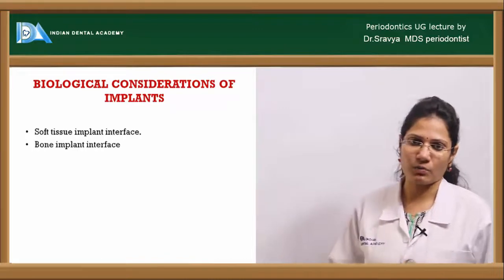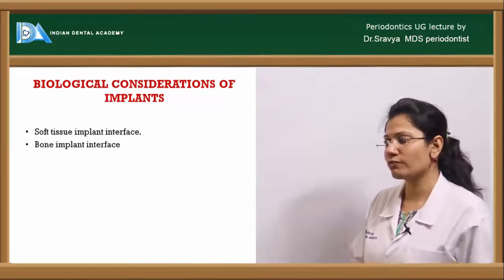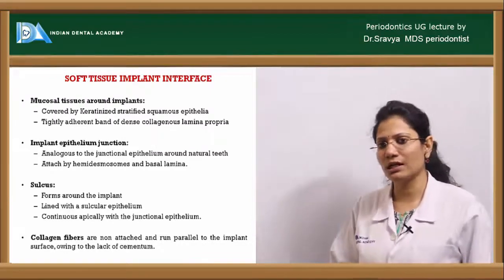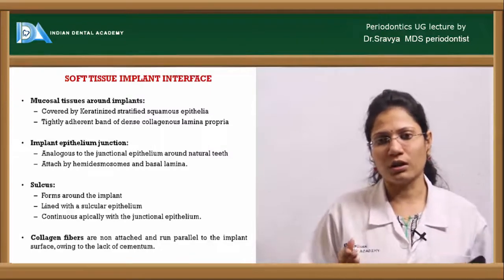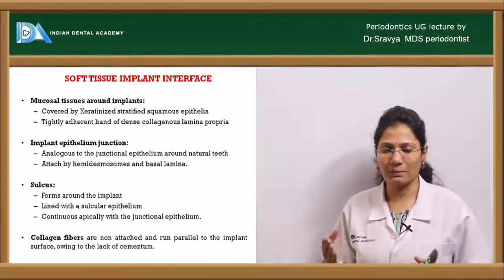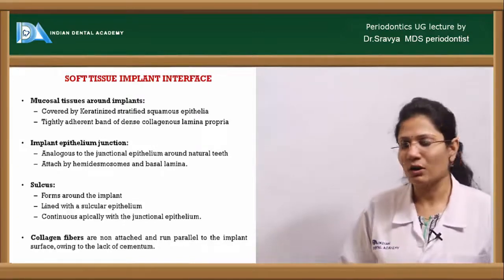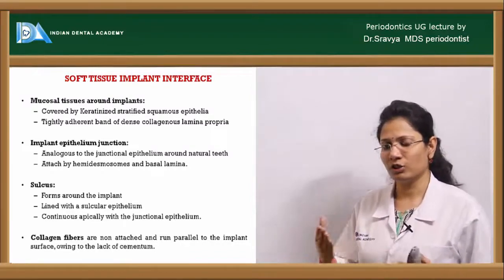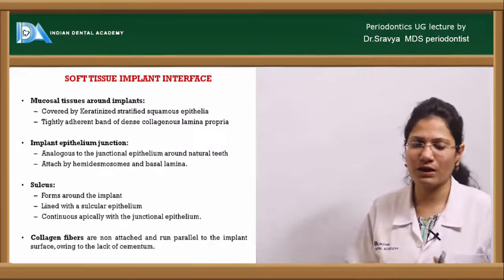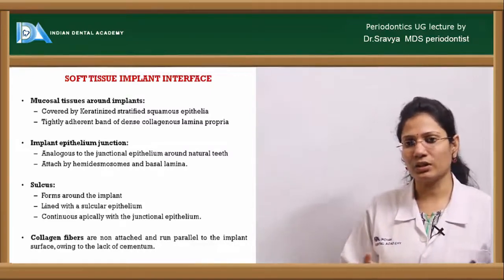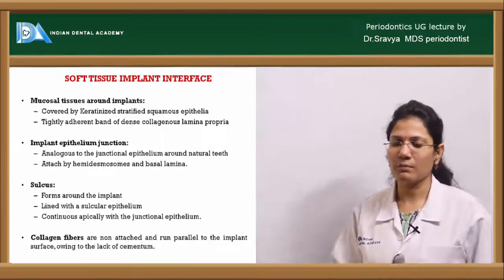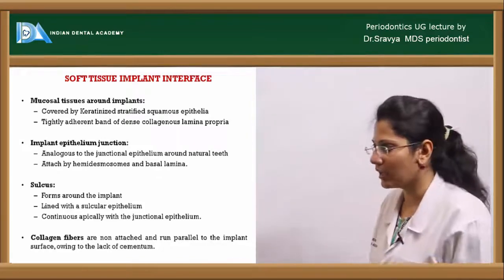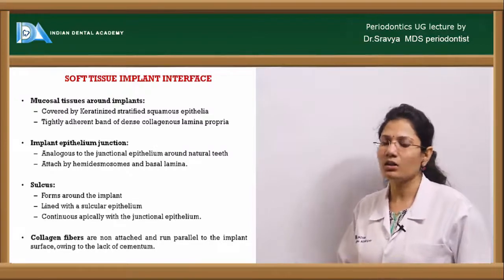The biological considerations of implants include the soft tissue implant interface and the bone implant interface. The mucosal tissue around an implant is almost similar to that around a natural tooth — covered by keratinized stratified squamous epithelium, with a thick band of connective tissue and collagen fibers. The junctional epithelium is similar in pattern to that of a natural tooth and is attached to the implant surface by basal lamina and hemidesmosomes. The sulcus is similar to that around a natural tooth and is lined by sulcular epithelium, continuous apically with the junctional epithelium.